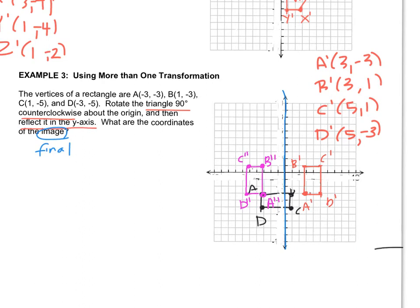And now we just have to get the image, final image. We need the coordinates. So A double prime is at negative 3, negative 3. Oh, that's where it started.